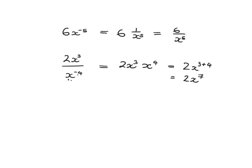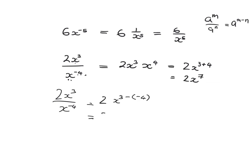Notice there's actually another way we could have done this. Remember that a to the m over a to the n means a to the m minus n. So here we've got x cubed over x to the minus 4, which means we take 3 subtract negative 4, giving us 3 plus 4, so it's 2x to the 7. Two different ways of doing it — whichever is more comfortable — but you get to the same answer.